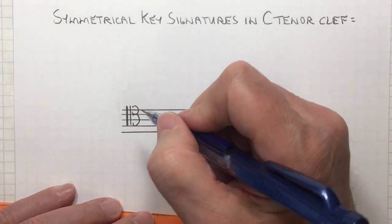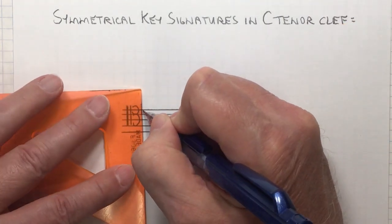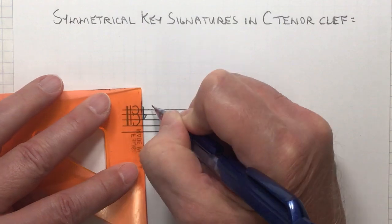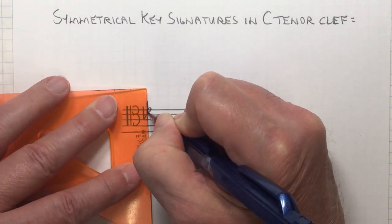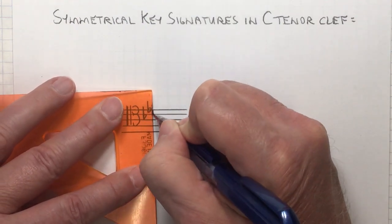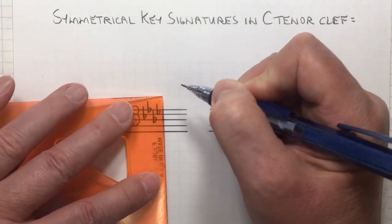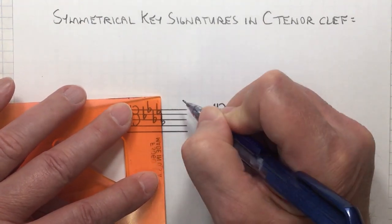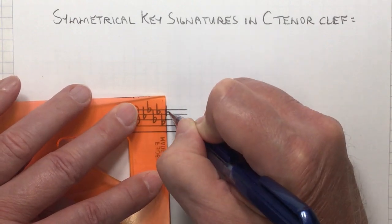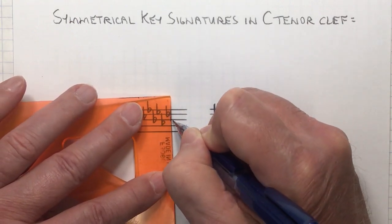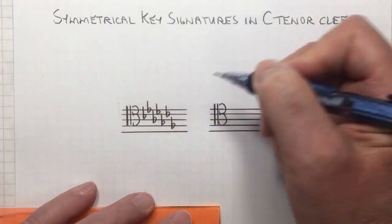Order of flats: B-flat, E-flat, A-flat, D-flat, G-flat, C-flat, F-flat.